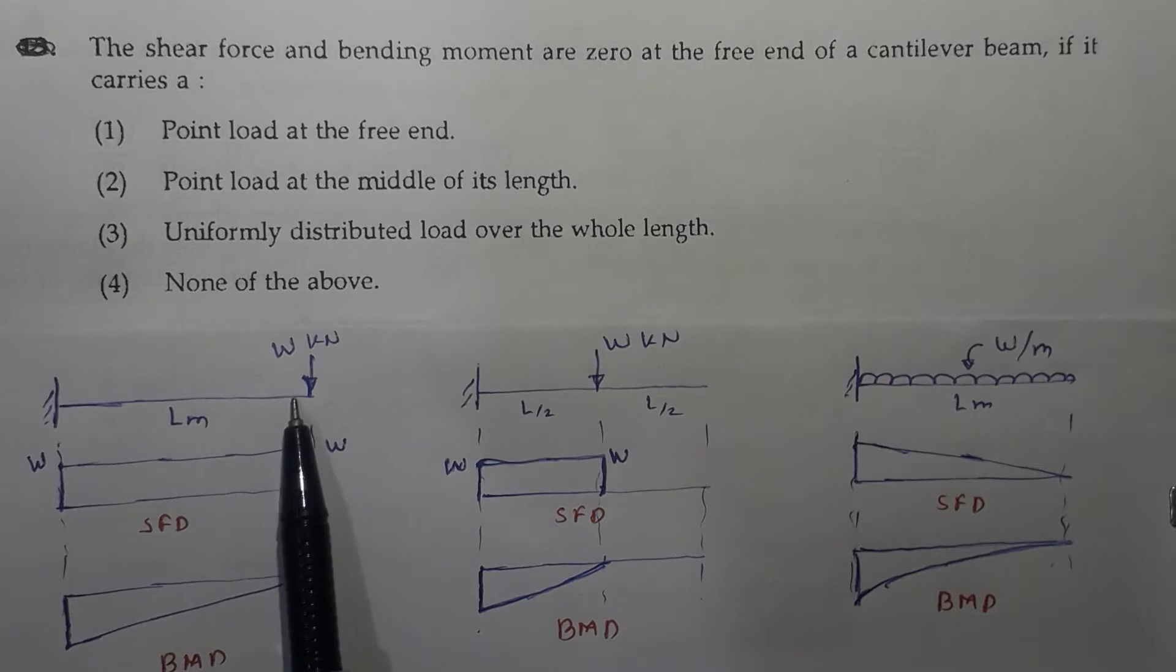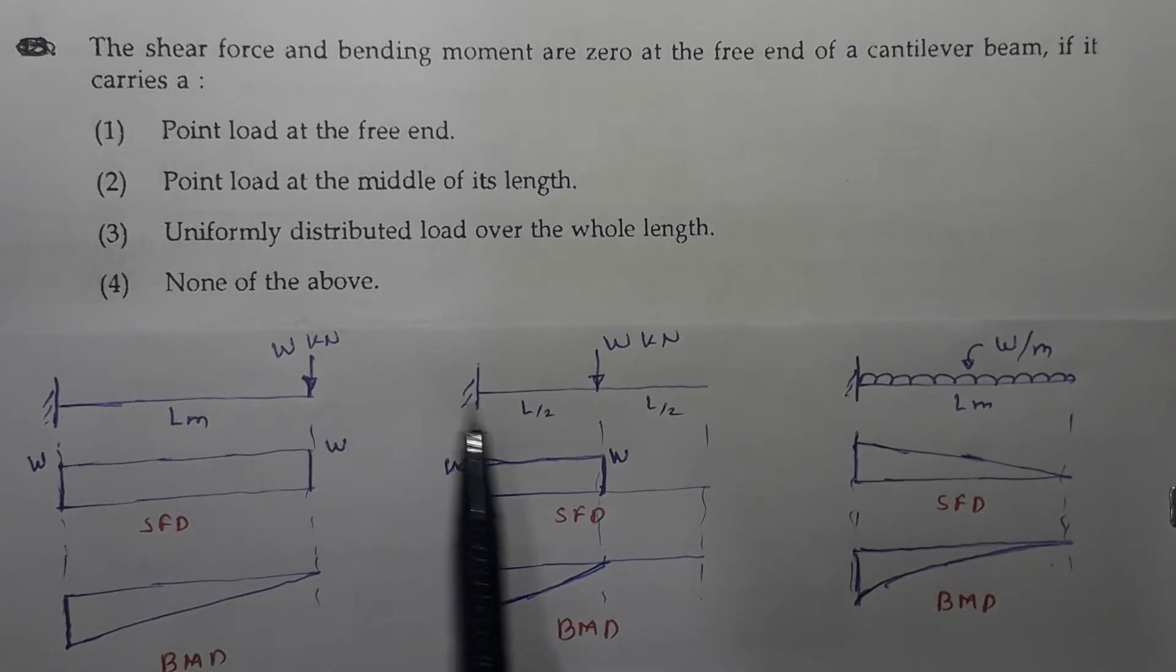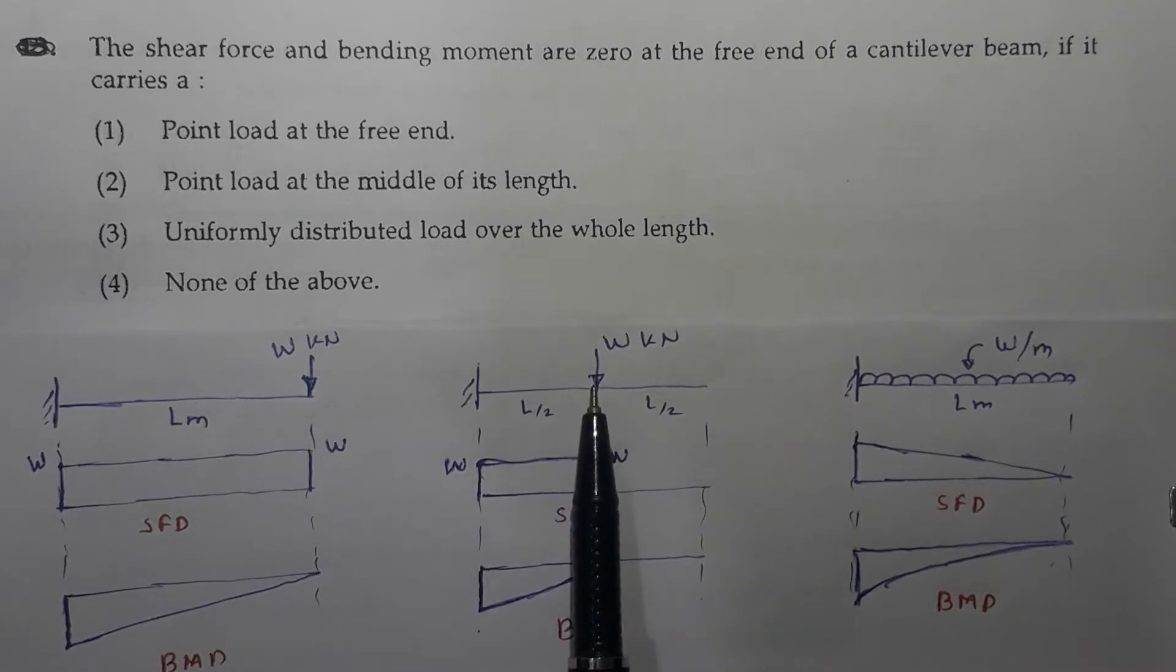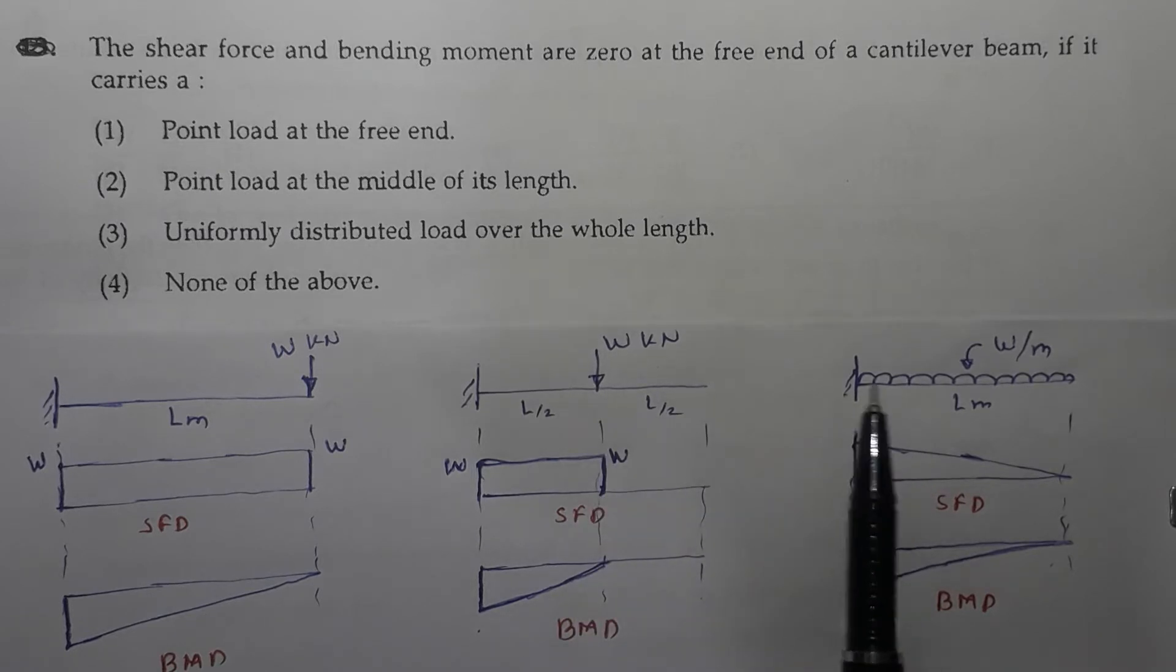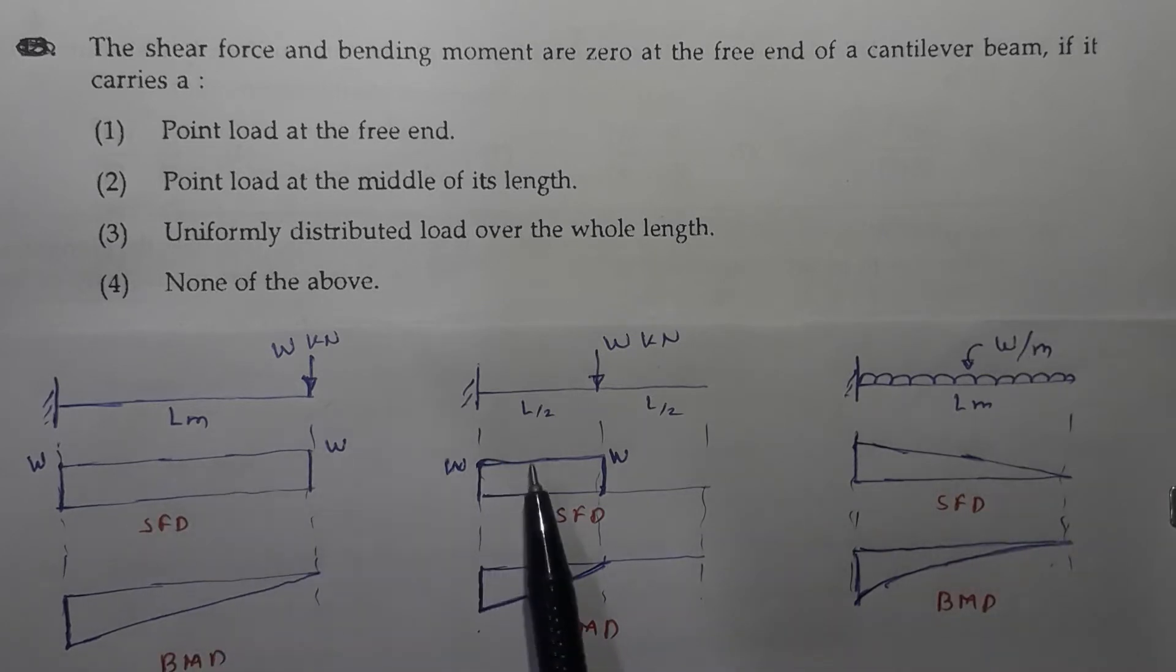In the first case, a cantilever is shown with a load at the free end. Second case, load is acting at the midpoint of this cantilever beam, and the cantilever is subjected to a UDL over its entire length. SFD for all these three cases is as shown. Here it will be a straight line, here also a straight line, there it will be an inclined line. Then again an inclined line over here, and a parabola over here.